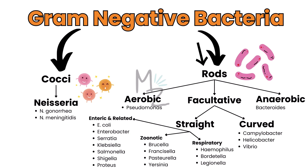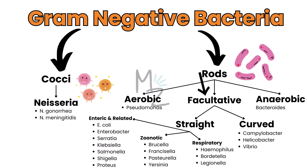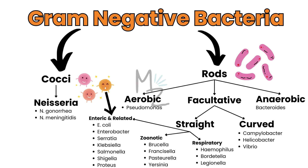Gram-negative rods are further subdivided into aerobic — for example, Pseudomonas; anaerobic — for example, Bacteroides; and facultative, which are subclassified into curved (e.g., Campylobacter, Helicobacter, and Vibrio) and straight. Straight rods are subclassified into enteric and related (e.g., E. coli, Enterobacter, Serratia, Klebsiella, Salmonella, Shigella, and Proteus), zoonotic (e.g., Brucella, Francisella, Pasteurella, and Yersinia), and respiratory (which include Haemophilus, Bordetella, and Legionella).